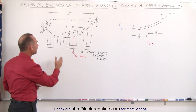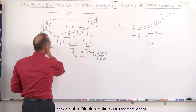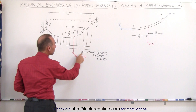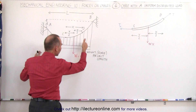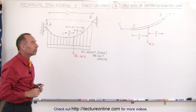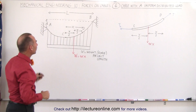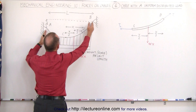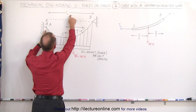Assuming that the weight per unit length is uniform, let's use W as the weight per unit length — the force pulling down on the cable per unit length. The distance between A and B, the two support points in the horizontal direction, is L.